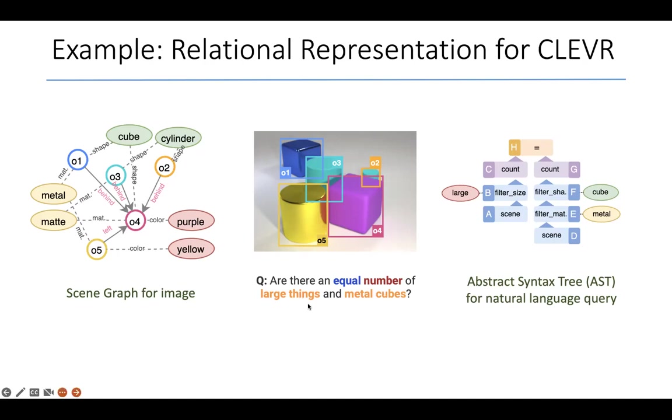Likewise, natural language text can be represented using abstract syntax trees. I've shown here one where the nodes of the abstract syntax tree are labeled A through H, and each node has a type. For example, it can be the entire scene that we are talking about, so all the objects O1 through O5.